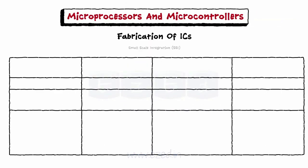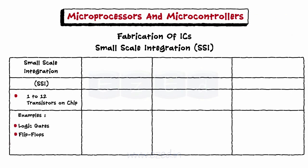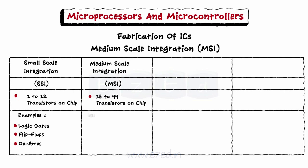The first type is small-scale integration. A small-scale integrated IC has 1 to 12 transistors on chip. Logic gates, flip-flops, and op-amps are examples of small-scale integrated ICs. The second type is medium-scale integration. In case of medium-scale integration, an IC or chip has 13 to 99 transistors. Counter, MUX, and adder circuits have medium-scale integrated ICs.